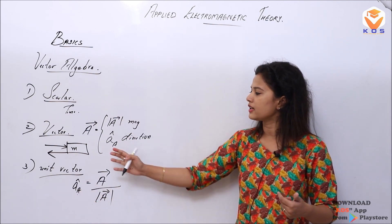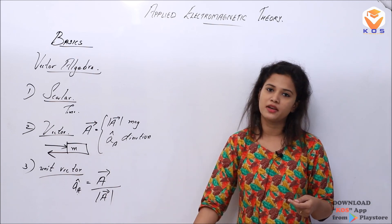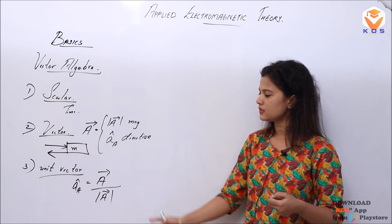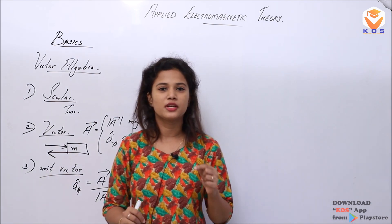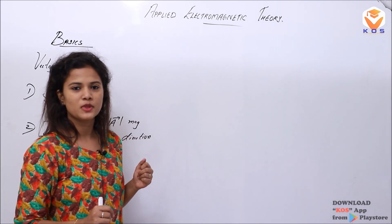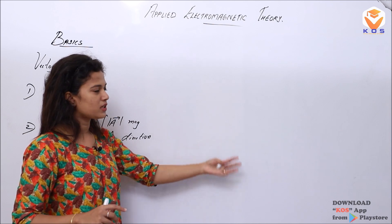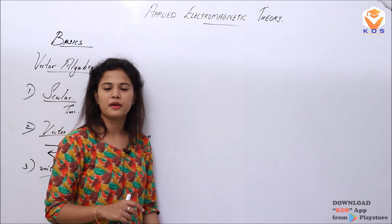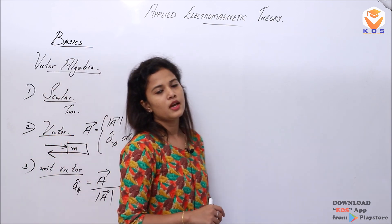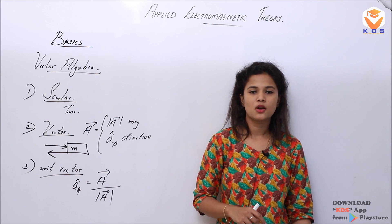A unit vector is a vector having both magnitude and direction, whose magnitude is equal to unity, and its direction is in the same direction as that of vector A. That is about scalars, vectors, and unit vectors. We now have a vector equation and we are going further to the basics.